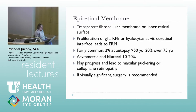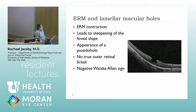Epiretinal membranes are a pretty common finding on clinical examination. On autopsy, 20% of eyes over age 75 have an epiretinal membrane. It's felt to be a proliferation of glial cells, RPE, and hyalocytes at the vitreoretinal interface. On clinical exam you'll see a transparent sheen with proliferation on the inner retinal surface. It can be bilateral, often asymmetric, with many patients having minimal visual complaints, but it can progress and cause distortion to the macular contour.